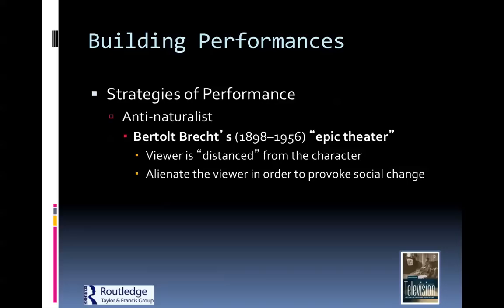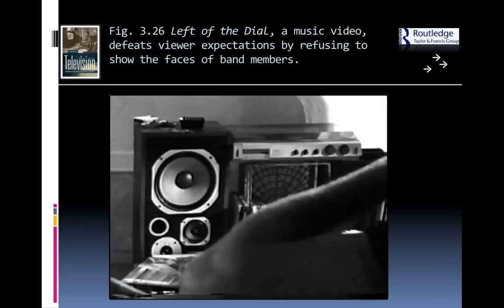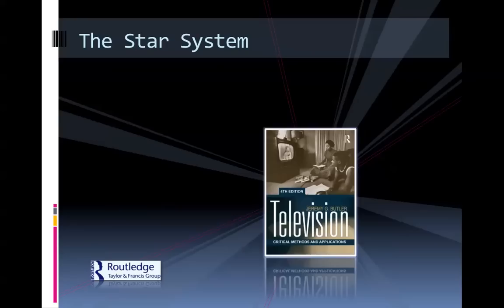Brecht really believed that if you took that emotional connection and empathy out of the equation, the viewer would be much more willing to do something about it in their own life. Sometimes a performance is so overwhelming that we cry and just want to forget it when it's over. But if you can get the audience relaxed and thinking more objectively — not caught up emotionally — they're more willing to go out into the real world and apply what they've learned. That's the effect of alienation and anti-naturalism.